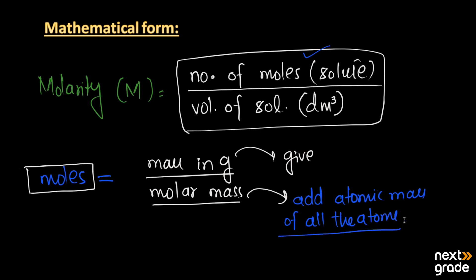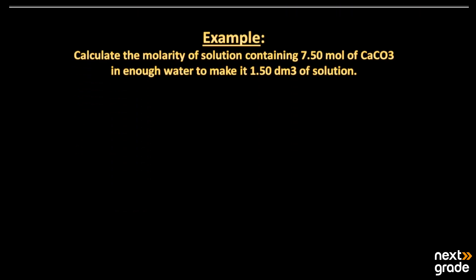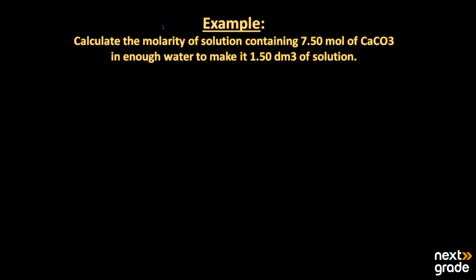By adding the atomic masses of all atoms, we can find the molar mass. Once we have both the mass and molar mass, we can easily find the number of moles, and from the number of moles we can find the molarity by putting the values into the formula.